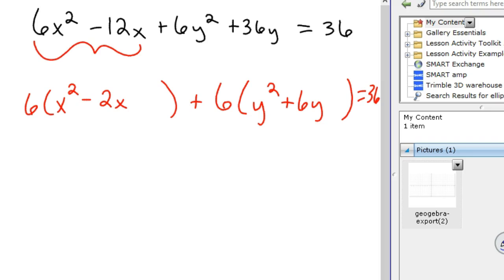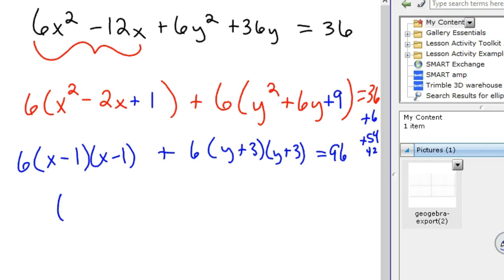Then we're going to complete the square, divide 2 by 1, that gives you 1 there. So you would add 6 to the other side. Here, divide 6 by 2 and square it, that's 3, that's 9. 6 divided by 2 is 3, 3 squared is 9. And so you would add 54 to this other side. We can go ahead and factor, so that would be 6(x-1)(x-1) + 6(y+3)(y+3) equals 36 plus 6 is 42, plus 54 would be 96.